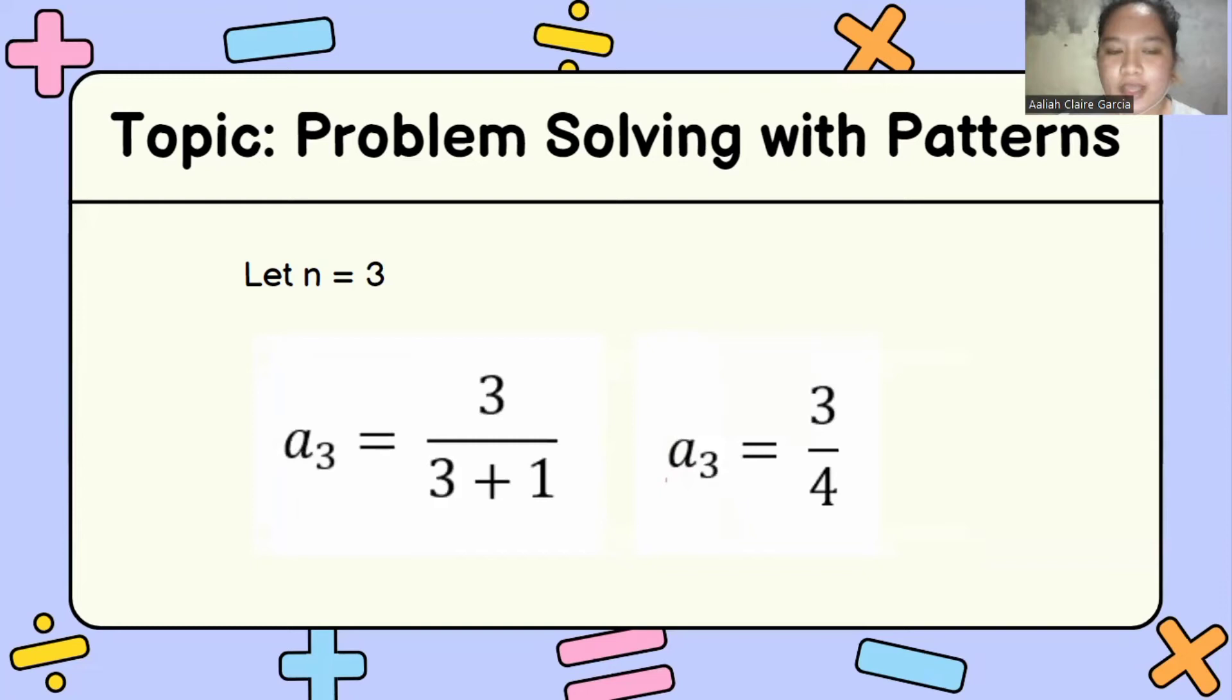To get the third term, a sub 3 is equal to 3 over 3 plus 1. a sub 3 is equal to 3 over 4 or 3 fourths.